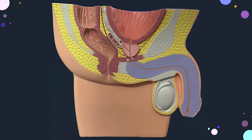The prostate has a base and an apex, an anterior surface, a posterior surface, and inferolateral surfaces. The base is the upper surface and fuses with the neck of the urinary bladder. The blunt apex is the lower part, and when the prostatic urethra emerges from here it becomes the membranous urethra, surrounded by the sphincter urethrae muscle. The anterior surface is closely associated with the pubic symphysis — the space between is called the retropubic space. The posterior surface is associated with the lower rectum, with the space known as the recto-vesical space.